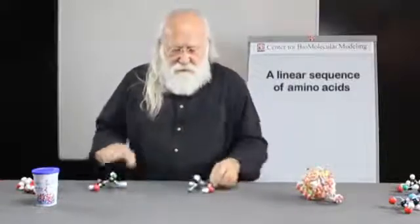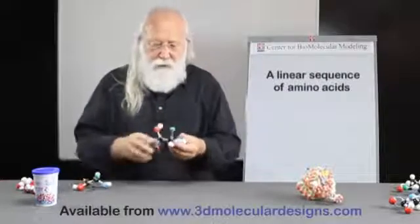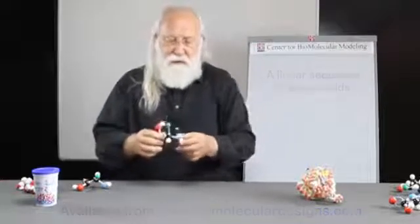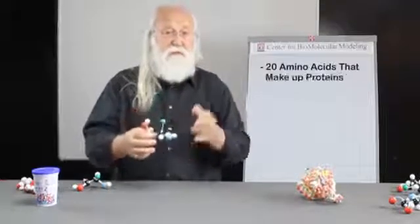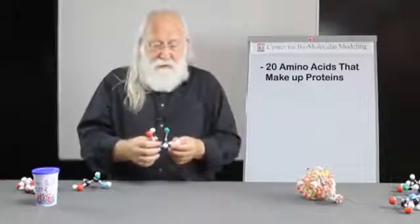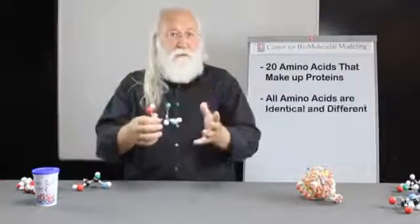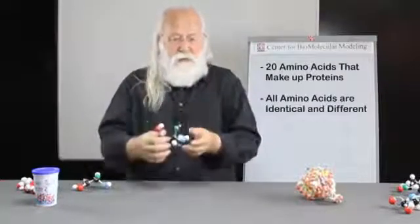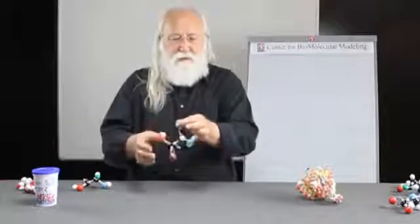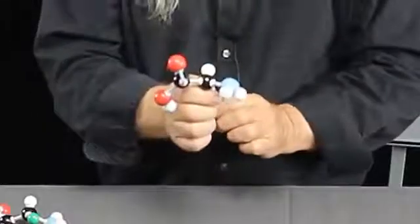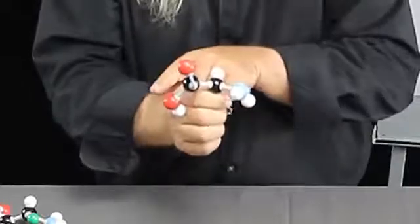So for this, we're going to use what we refer to as the MolyMod model of an amino acid. And we like to say things like, first of all, we say there are 20 common amino acids that make up proteins. And then we confuse students by saying that all 20 amino acids are identical and different. And that doesn't make any sense. But if you grab this amino acid by the green sphere and hold it like this, we can talk about the backbone of the amino acid.